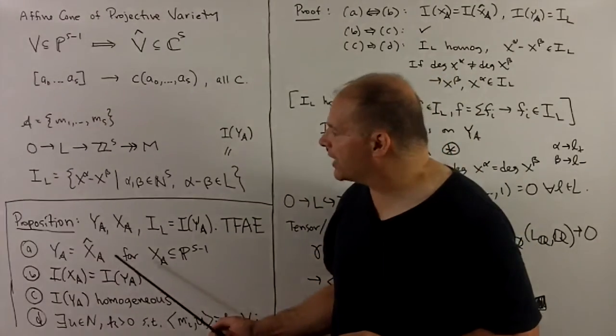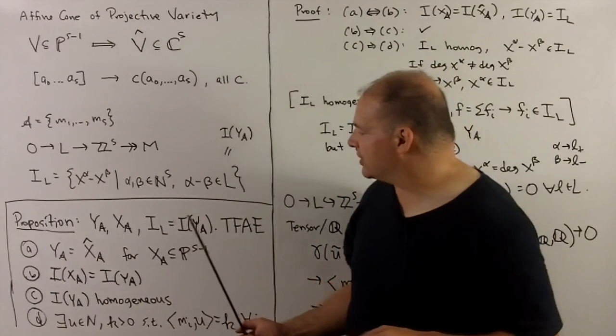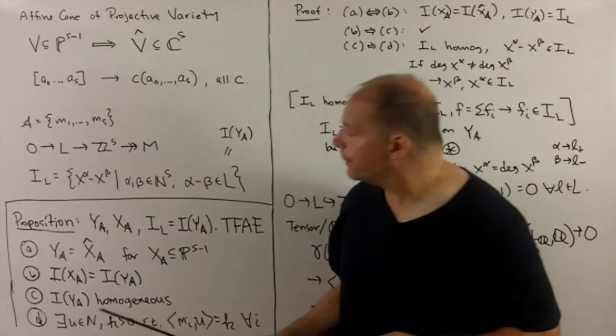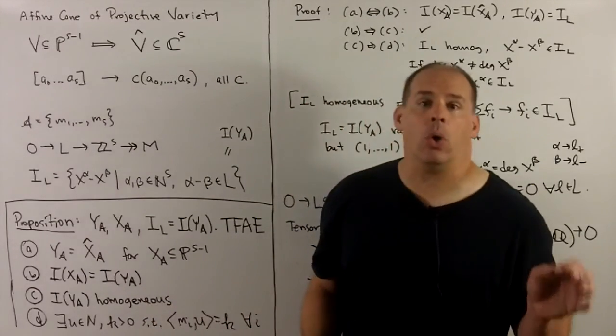The proposition says, we've set up yA, xA, we've noted that the toric ideal is the same as the ideal for yA. The first condition is yA is equal to the cone over xA. Second, the ideal for xA is the ideal for yA.